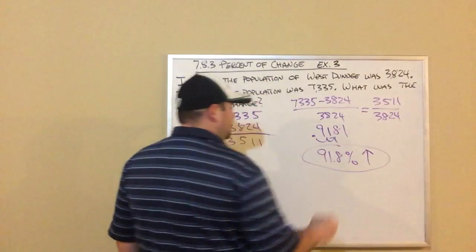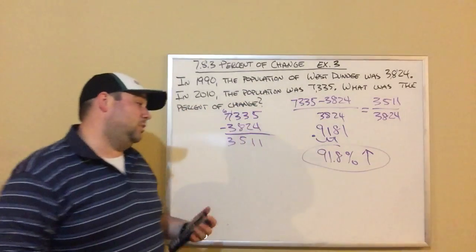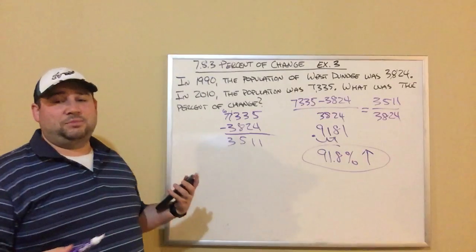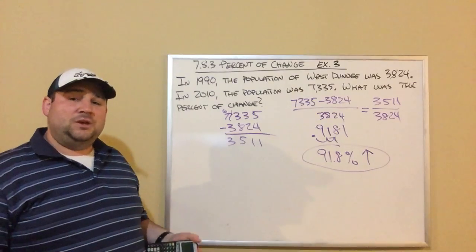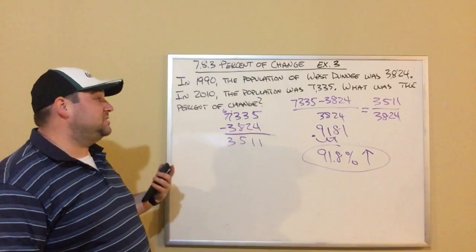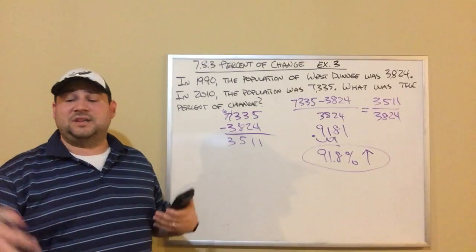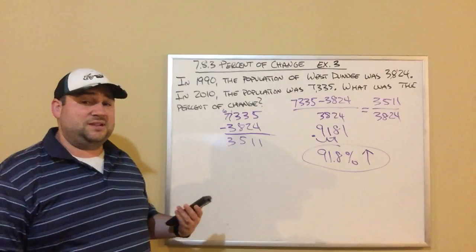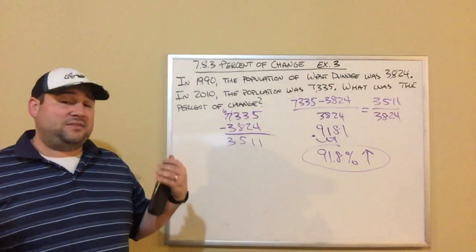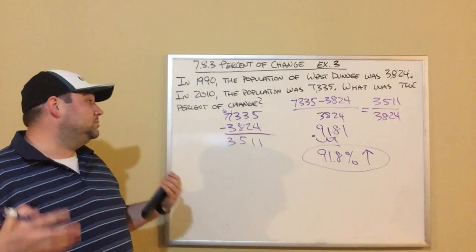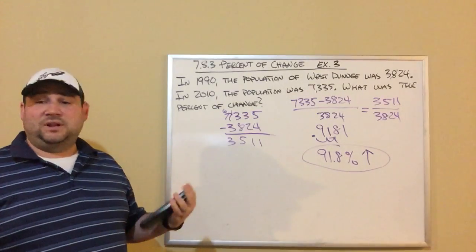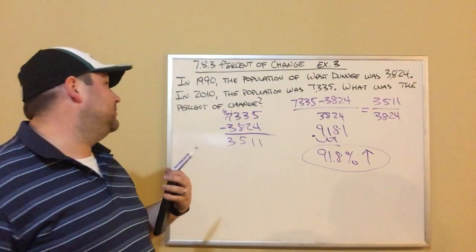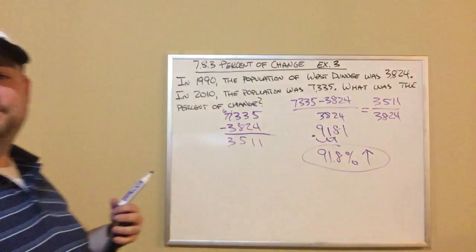This was an increase because the population went up from 1990 to 2010, so we had a population increase of 91.8 percent. That's example three. You've got some practice problems to do — complete those and check them with the answer key in Google Classroom. Then do your accelerated math objective, and once you're done with that, you are done with math for today.